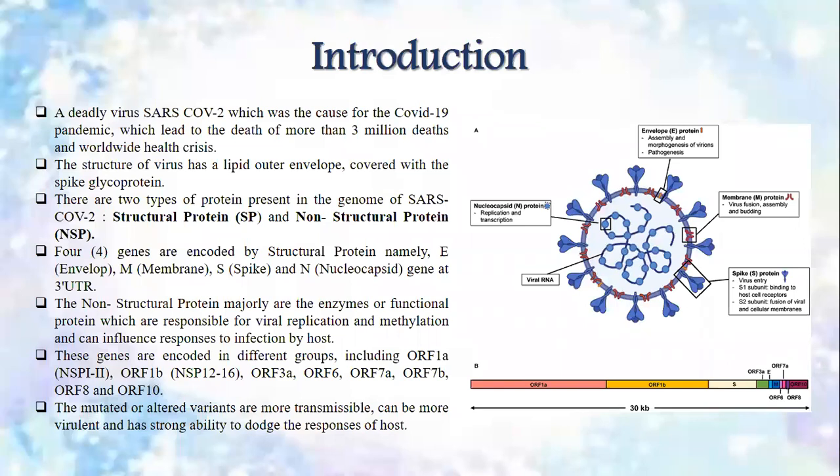The structure of the virus has a lipid outer envelope covered with spike glycoprotein. There are two types of proteins present in the genome of SARS-CoV-2. The first is structural protein, which encodes for four genes: E for envelope, M for membrane, S for spike, and N for nucleocapsid gene at the 3' UTR.